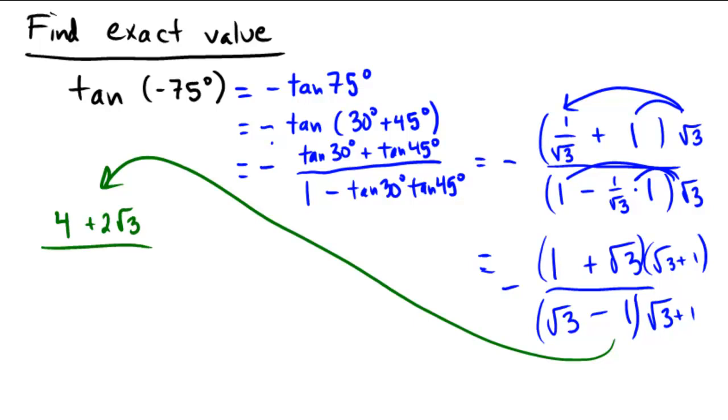And then the bottom, we'd have 3 minus 1 conveniently, right? Because that's a difference of squares. And 3 minus 1 is just 2.